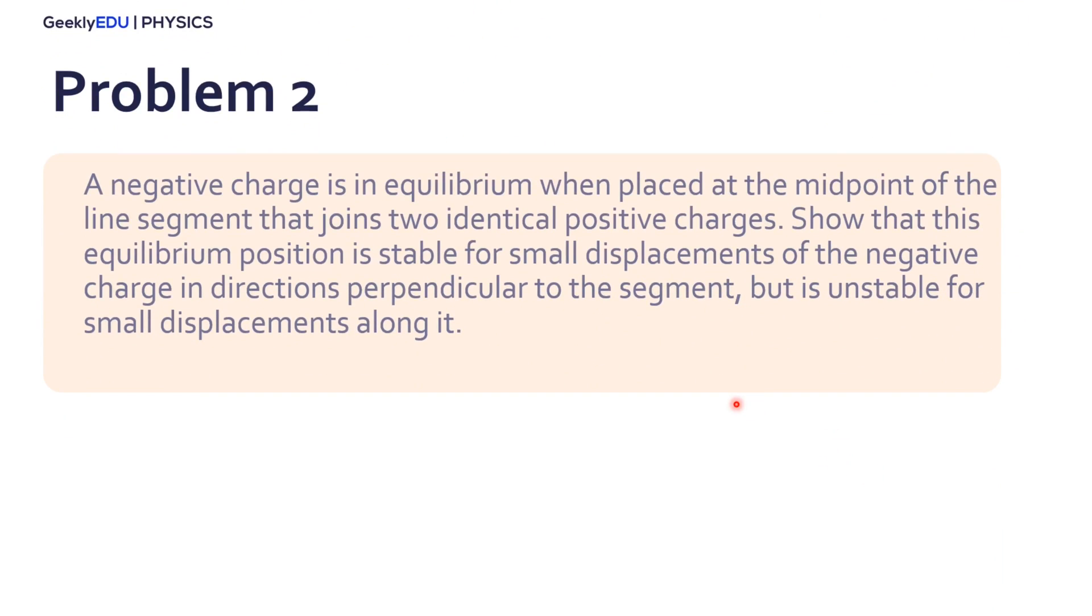Now let's go through problem number two. In this problem, a negative charge is in equilibrium when placed at the midpoint of the line segment that joins two identical positive charges. So that's the situation here. We have two positive charges and one negative right in the middle in equilibrium. So we want to show that this equilibrium position is stable for small displacements of the negative charge.